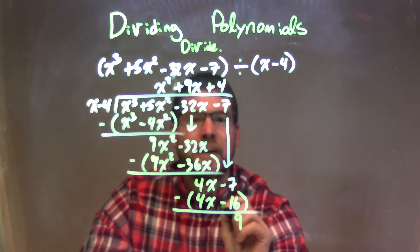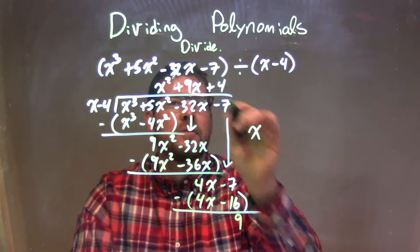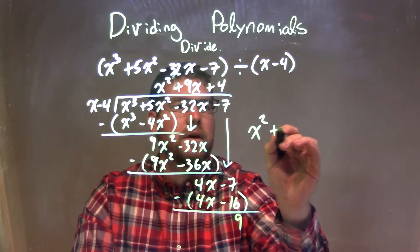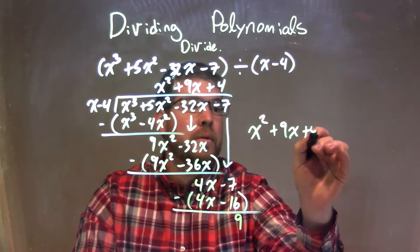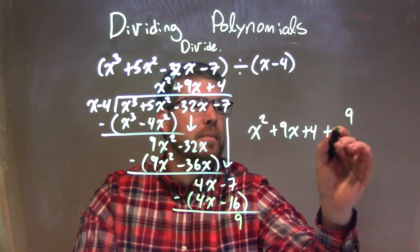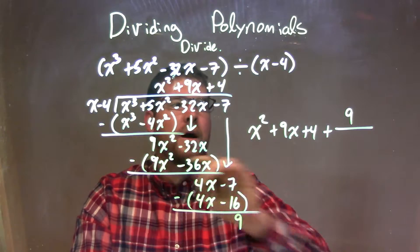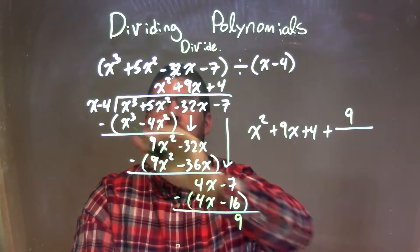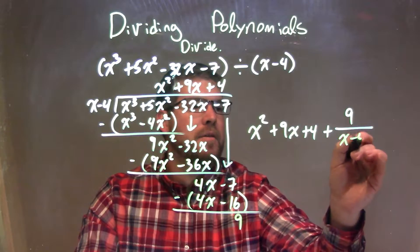So a positive 9 is my remainder. And so my final answer is what's written up here: x squared plus 9x plus 4, plus 9 over my divisor — that 9 being my remainder — over x minus 4. And that is my final answer.